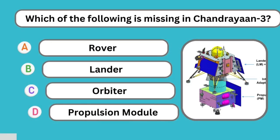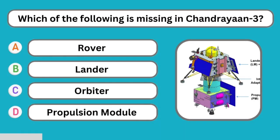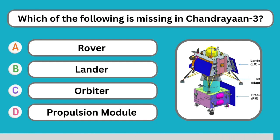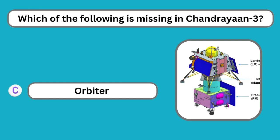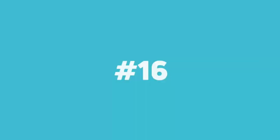Question number fifteen: Which of the following is missing in Chandrayaan 3 — rover, lander, orbiter, or propulsion module? The correct answer is orbiter. Chandrayaan 3 used the orbiter from Chandrayaan 2.